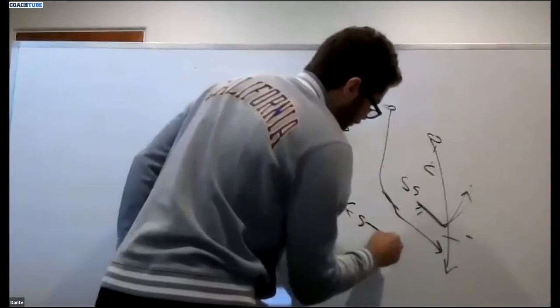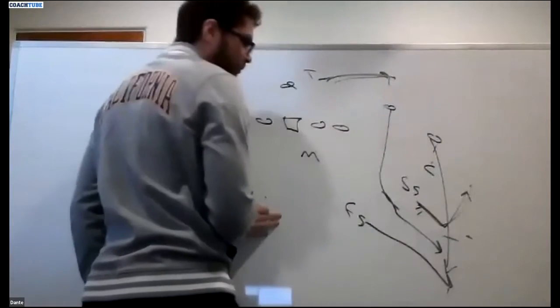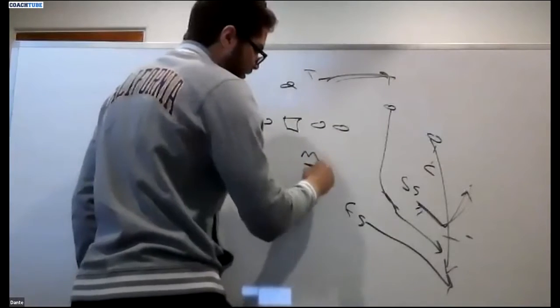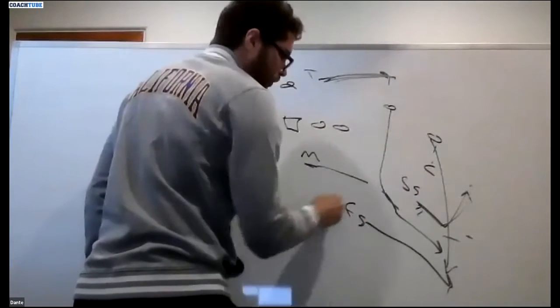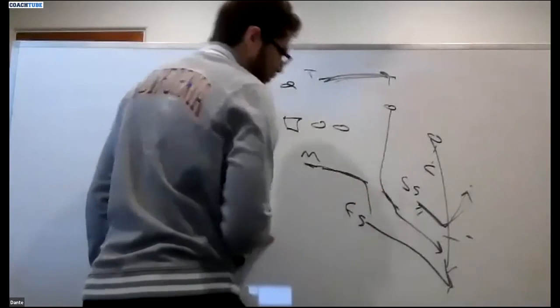So three's fast. I'm going to try to get outside of the number two. I'm going to get width and depth towards the number two. The Mike Backer, when three's fast, is going to go cut the two. So he's going to start to build the fence on the number two receiver.